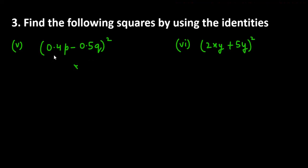Let's now start with fifth part. Fifth part is 0.4p minus 0.5q ka whole square. Here you can see that subtraction sign hai in between. So we have to use a minus b ka whole square which is a square minus 2ab plus b square.